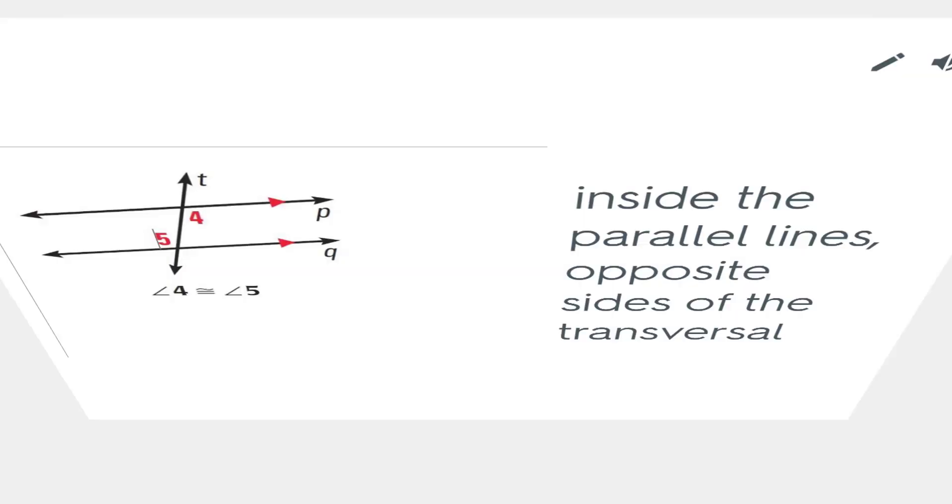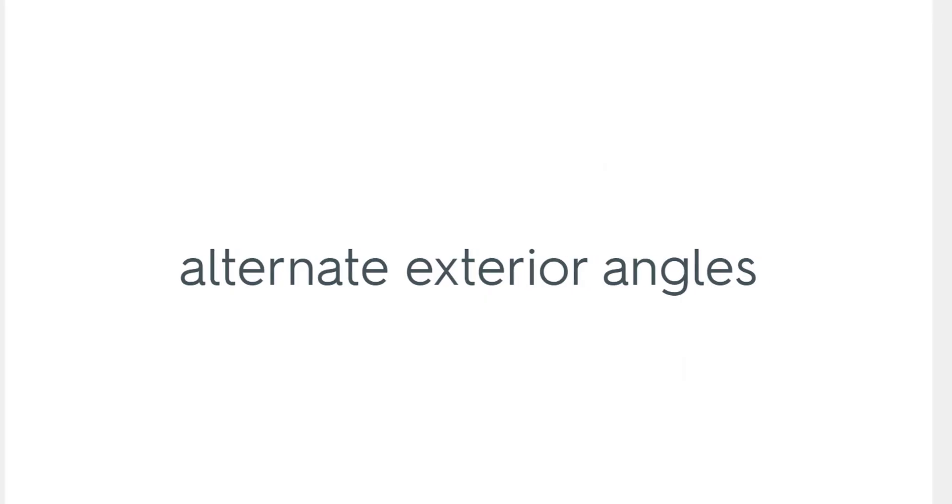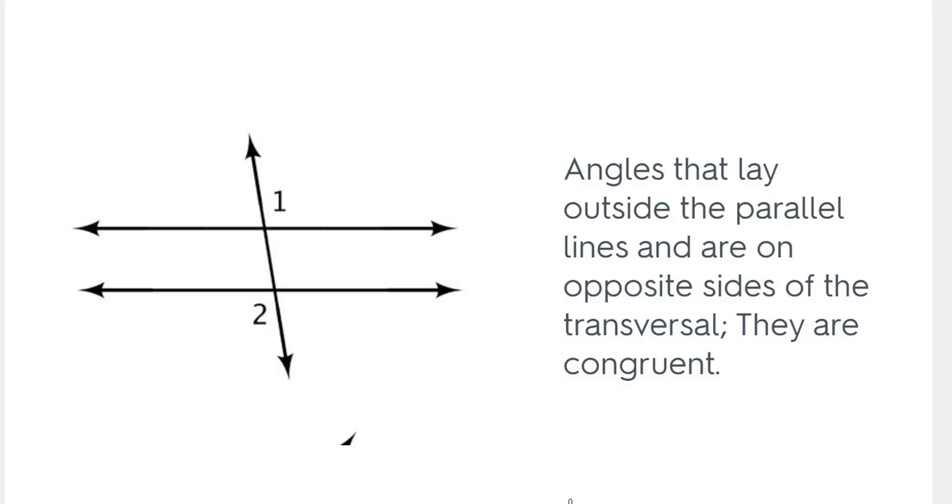Alternate interior angles. This happens when two angles are inside of the parallel lines, and they are on opposite sides of the transversal. Angle five and angle four are the same obtuse angle, which means they are equal to each other, and they are on the inside of the parallel line. Alternate exterior angles are angles that are on the outsides of the parallel lines, and they're on opposite sides of the transversal. Number one is an obtuse angle, and number two down here is an obtuse angle. They are the same degree amounts.